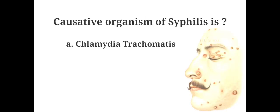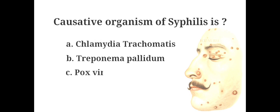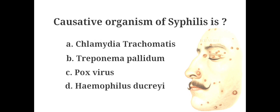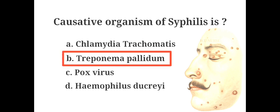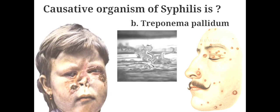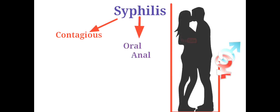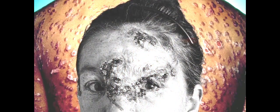The causative organism of syphilis is: A. Chlamydia trachomatis, B. Treponema pallidum, C. Pox virus, D. Haemophilus ducreyi. The answer is B. Treponema pallidum. Syphilis is a highly contagious disease spread primarily by sexual activity. Symptoms are small, painless sores seen in stage 1. In stage 2, rashes appear all over the body. If left untreated in stage 3, the internal organs will be affected.